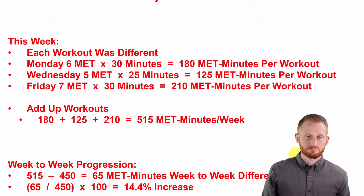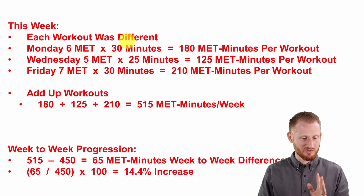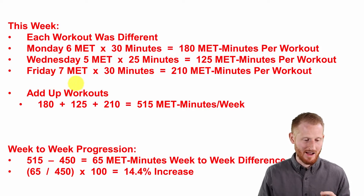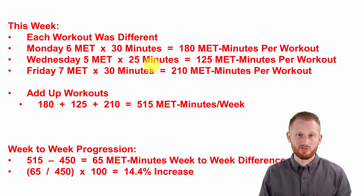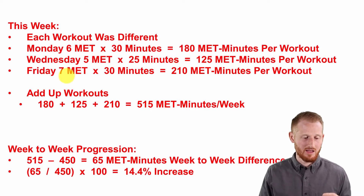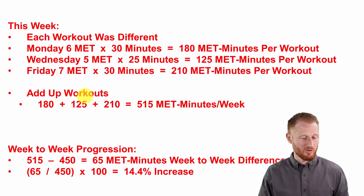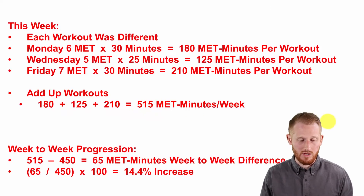This week she varied it up, so each workout was different and we need to calculate each one separately. On Monday she did six METs for 30 minutes: six times 30 equals 180 MET-minutes. Wednesday was five METs for 25 minutes, giving 125 MET-minutes. Friday was seven METs for 30 minutes, giving 210 MET-minutes. Adding 180, 125, and 210 gives 515 MET-minutes for the week.